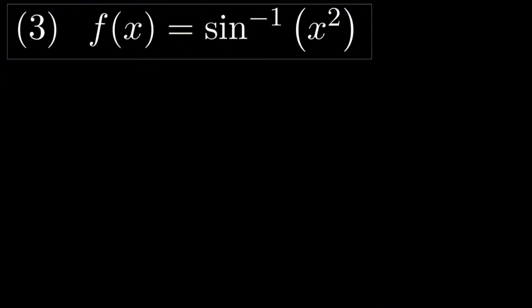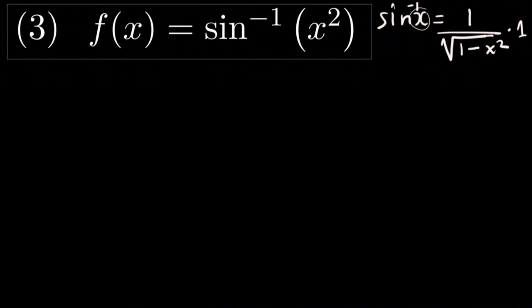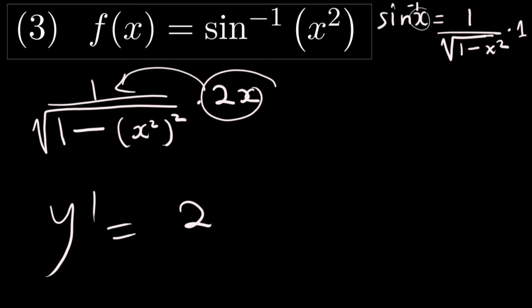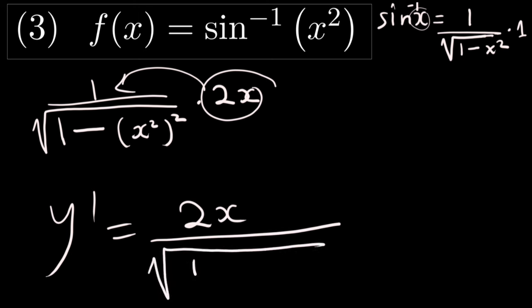For the next question, we use sin inverse of x squared. We know sin⁻¹x has derivative 1 over the square root of 1 minus x squared. So we write 1 divided by the square root of 1 minus (x²)² = 1 minus x⁴, then multiply by the derivative of x squared, which is 2x. So y dash equals 2x divided by the square root of 1 minus x⁴.